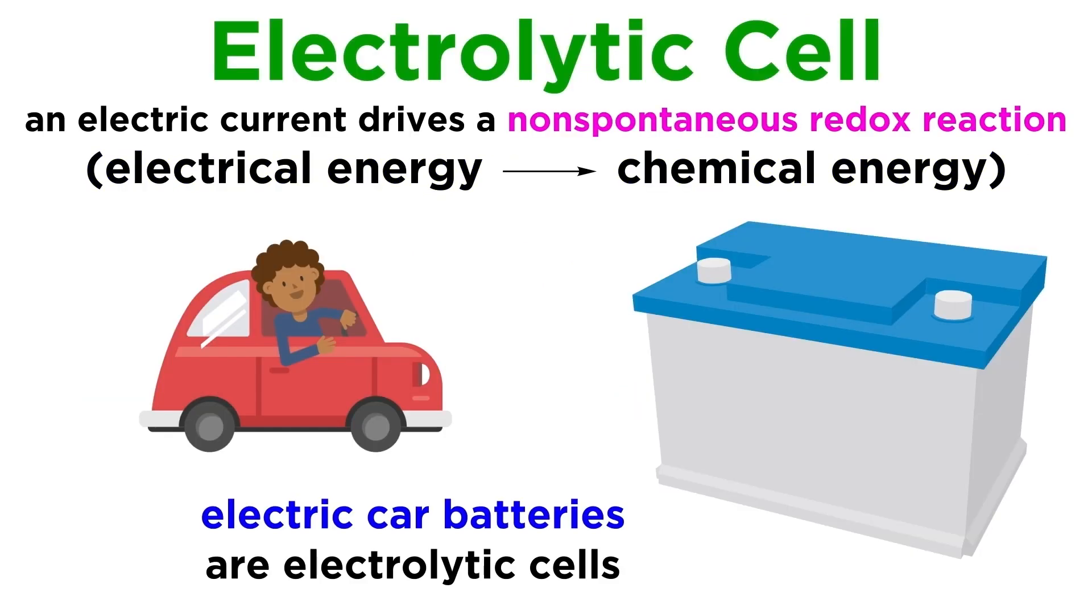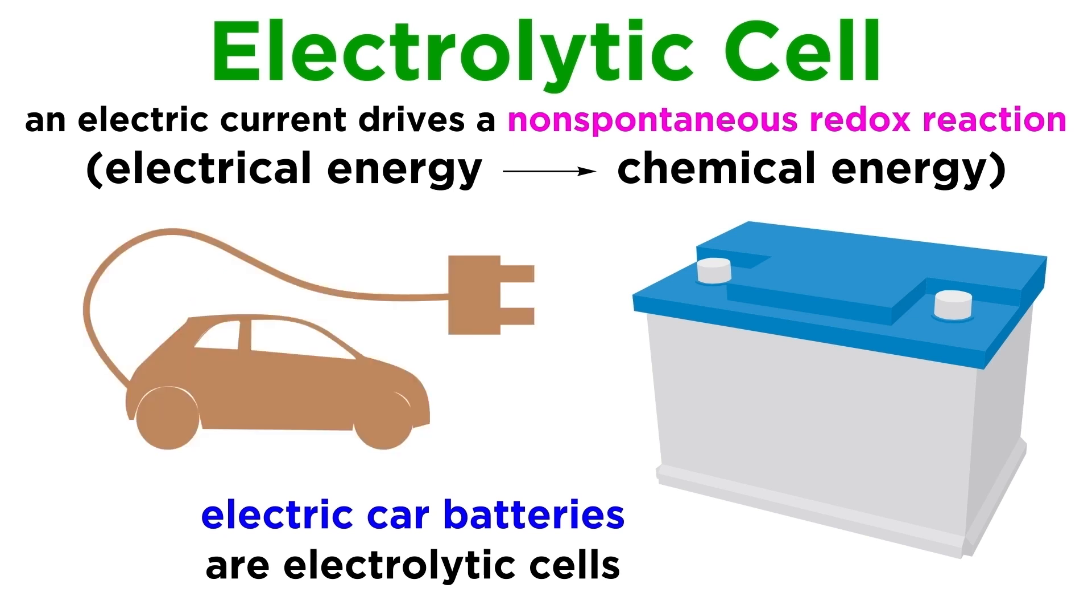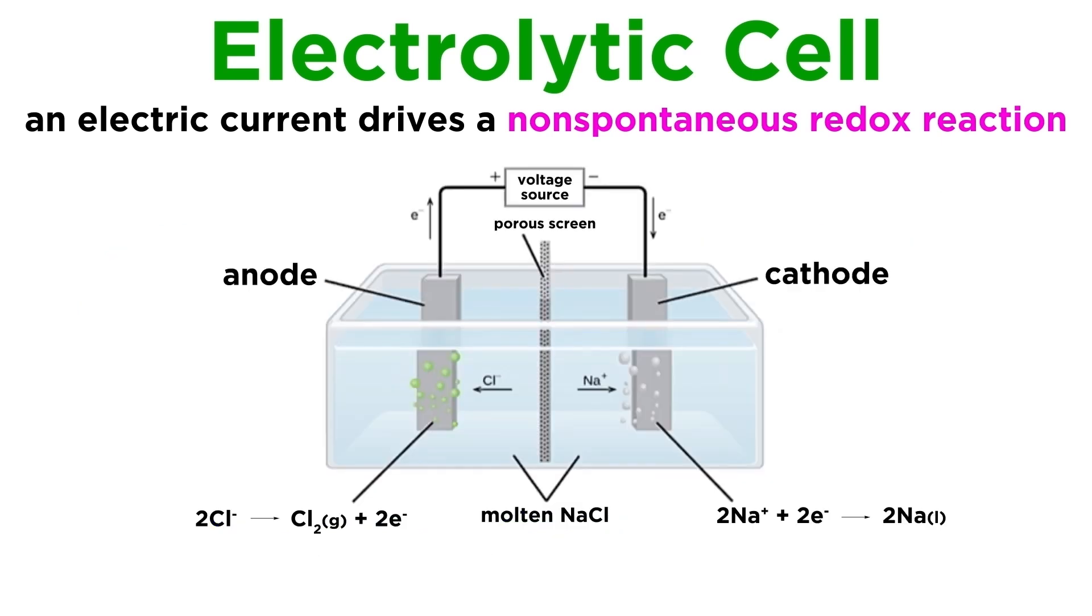Another example of an electrolytic cell is the type of battery found in an electric car. The battery charges up when plugged into a source of electricity and then can be used to power the car. Now that we know the definition of an electrolytic cell, let's look at a few examples of electrolytic solutions to see exactly what is going on at the anode and cathode in each case.